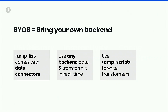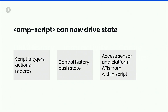We also made it possible to bring your own backend. AMP list now comes with data connectors and you can use any backend data and transform it in real time. You can also use AMP script to write those transformers, so it's very simple to use. AMP script can now drive state — script triggers, actions, macros — you can write them all in AMP script. You can control the history push state with AMP script and access sensor platform APIs within script.